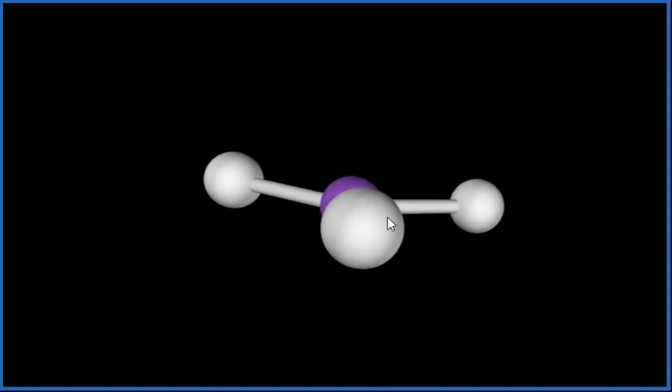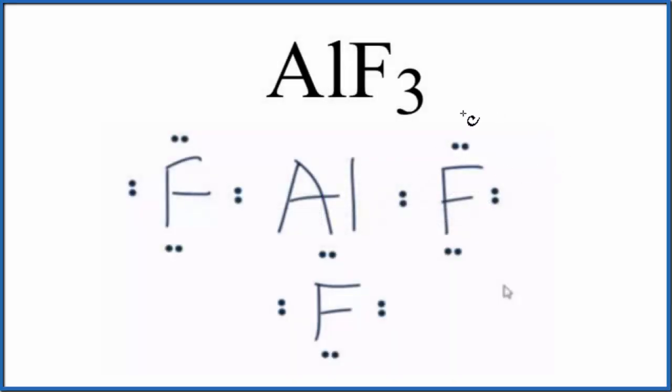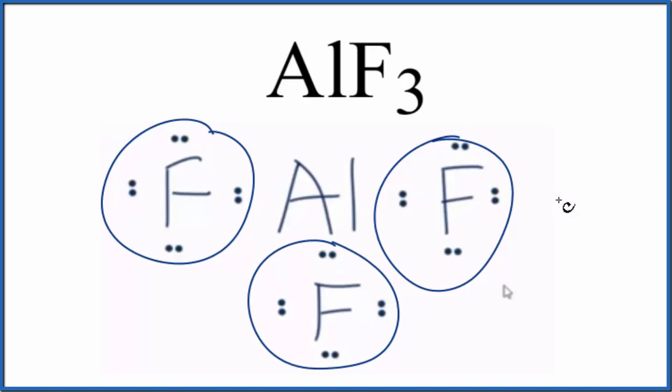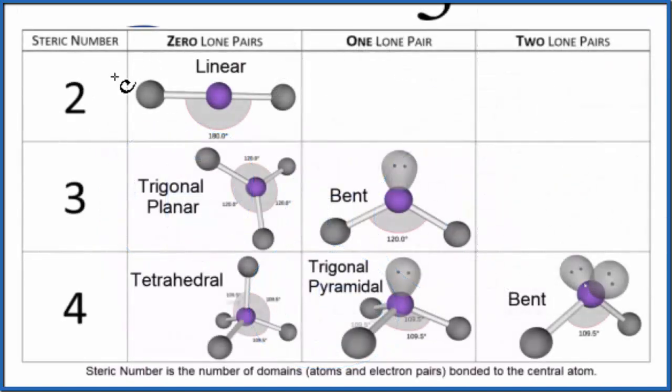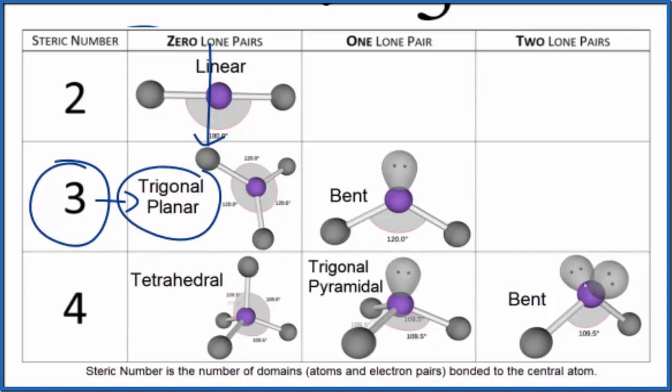Let's go back to our Lewis structure here. So if we couldn't visualize that, there are two other ways we can figure this out. The first is count the number of things bonded to the aluminum. So we have one, two, three. Then we'll look at this chart here. And if we have three things bonded, that's our steric number, and here we have no lone pairs. So we end up with a trigonal planar molecular geometry for AlF3.